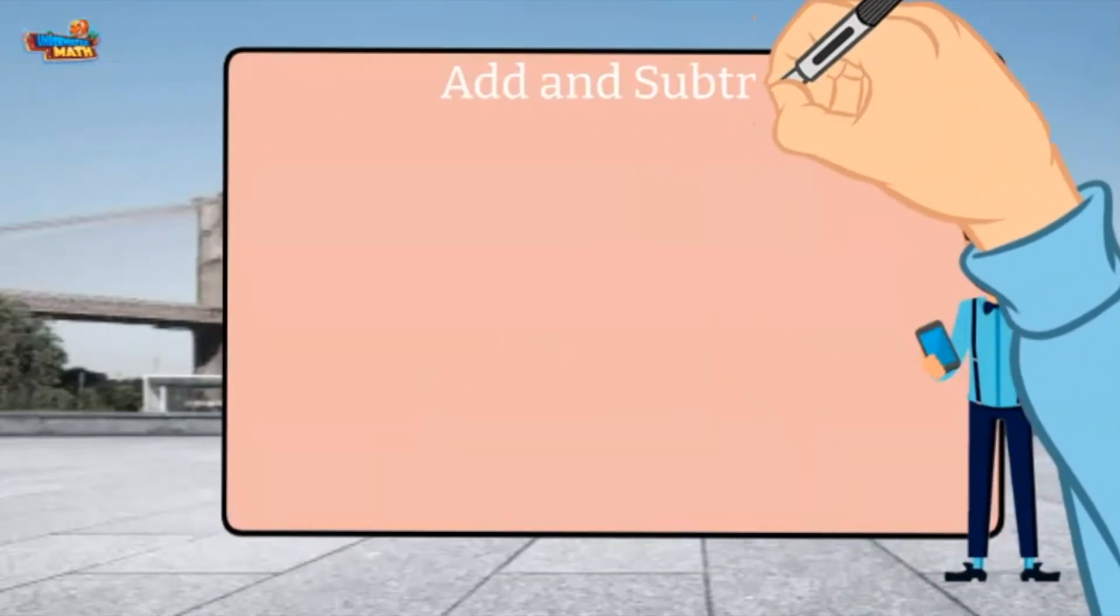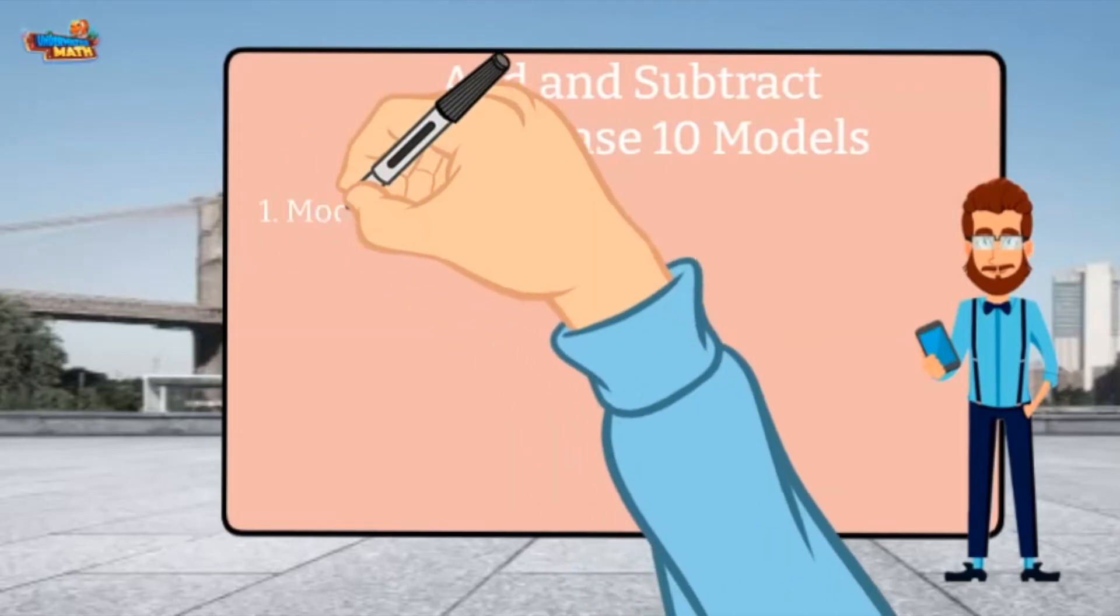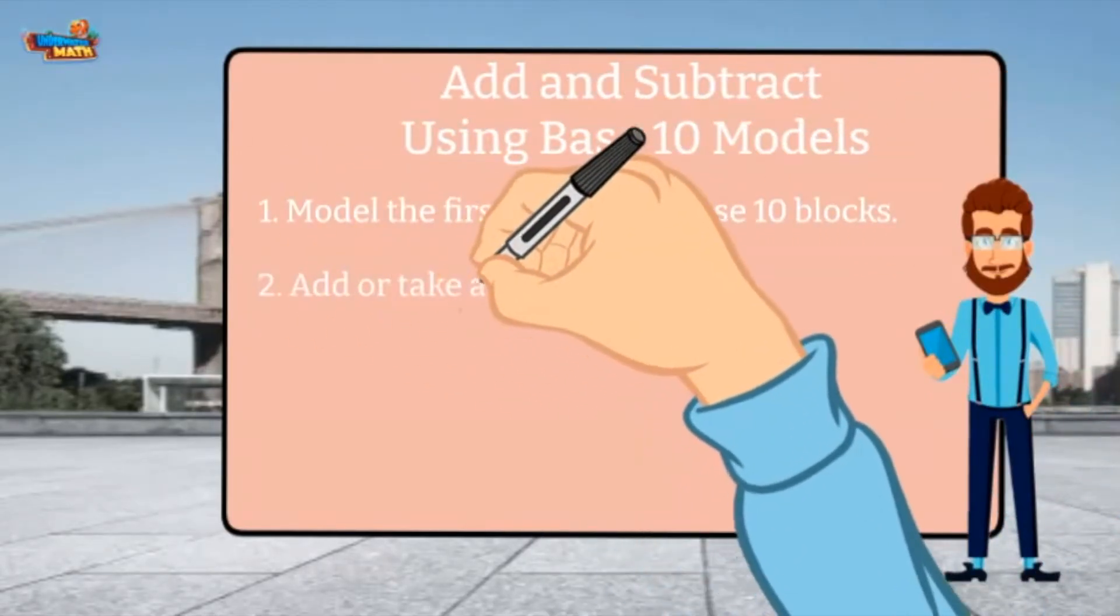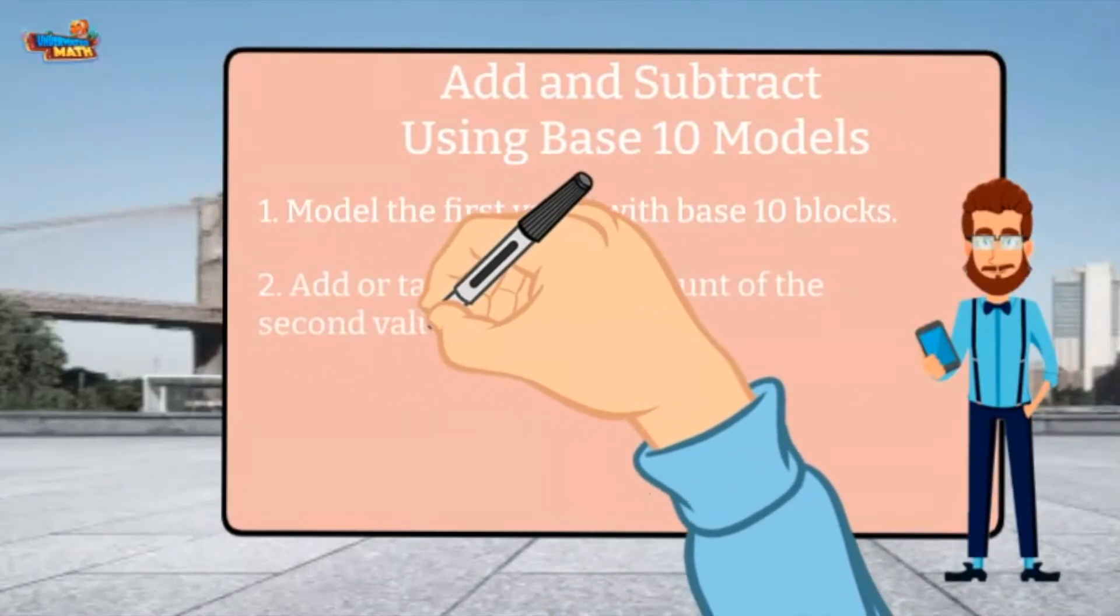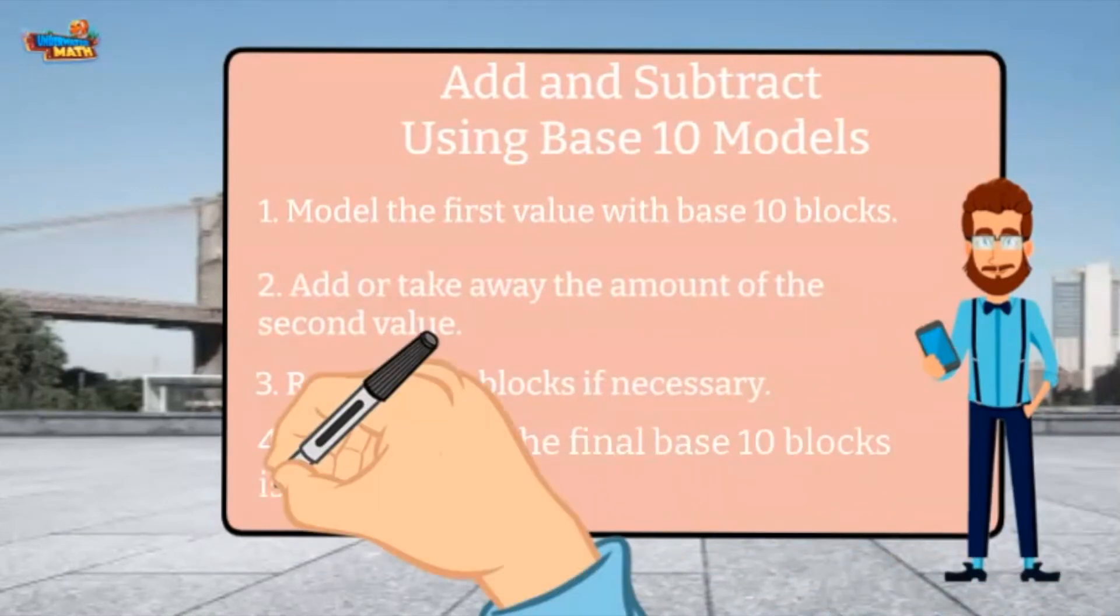I can also add and subtract using base 10 models. Here are the steps. Model the first value with base 10 blocks. Next, add or take away the amount of the second value. Regroup the blocks if necessary. The value of the final base 10 blocks is the answer.